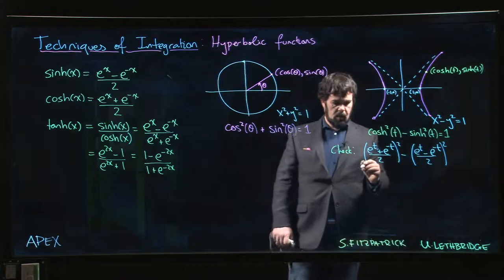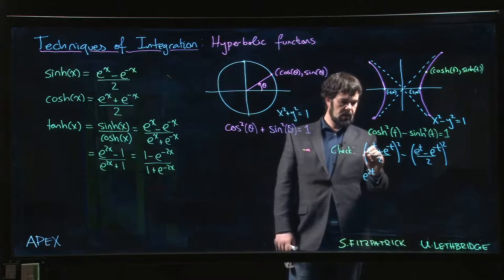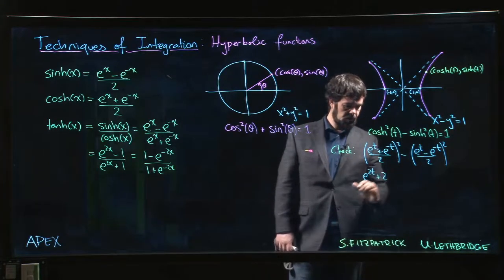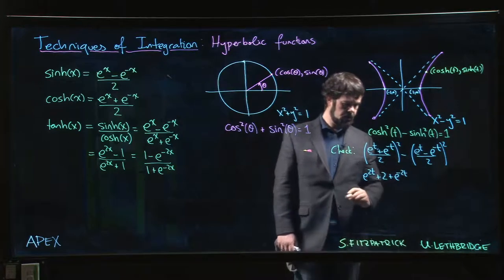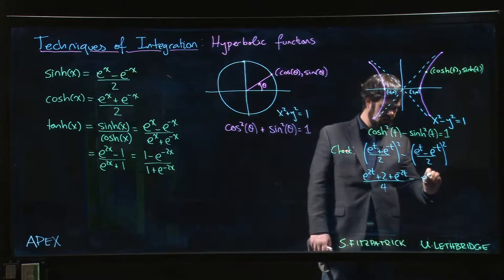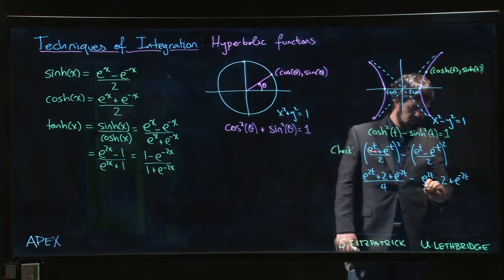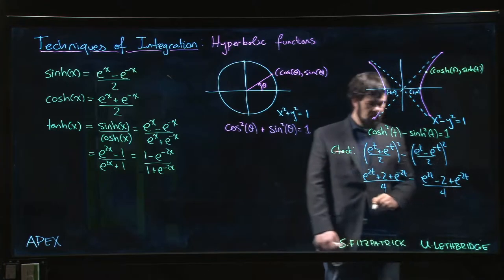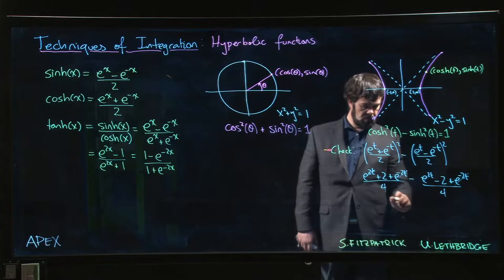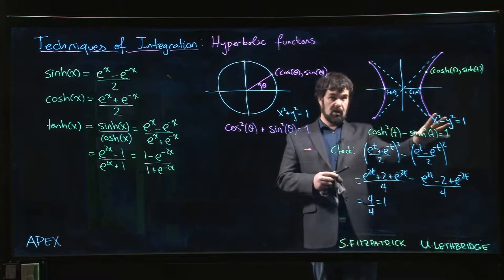So if we square that, e to the t times e to the t, I get e to the 2t. The cross term, e to the t times e to the minus t—that's e to the t times 1 over e to the t—cancels out. You get two of them, so plus 2, plus e to the minus 2t, over 4. Subtract e to the 2t minus 2 plus e to the minus 2t over 4. And of course when you subtract these, well those are going to cancel, those are going to cancel, 2 minus minus 2 gives me 4 over 4.